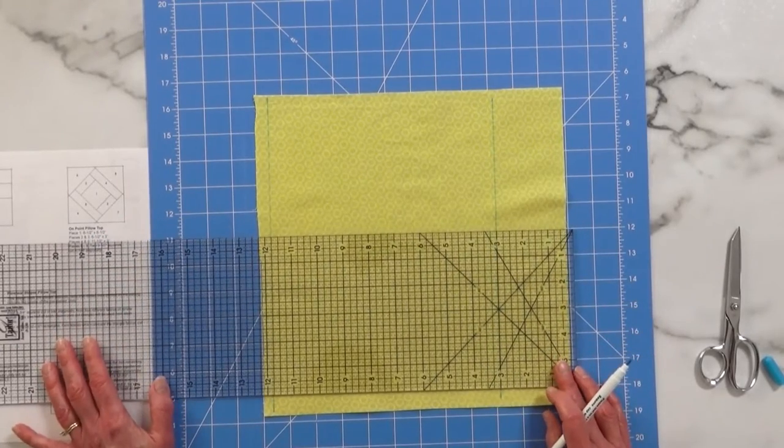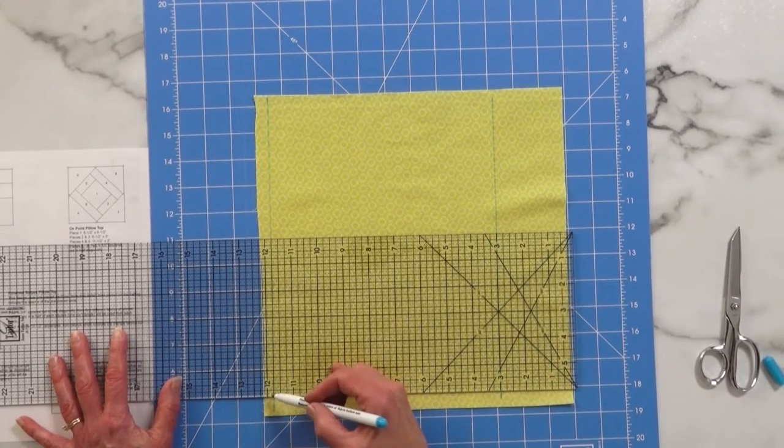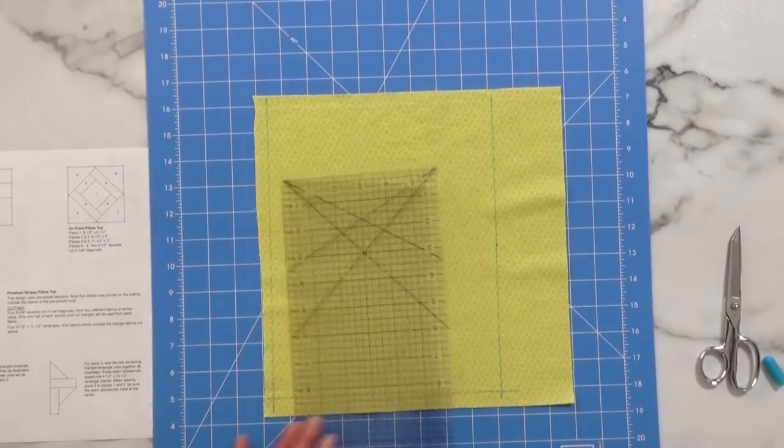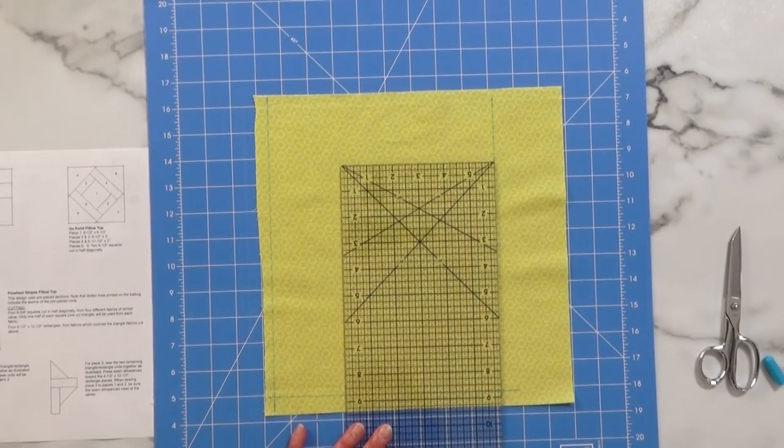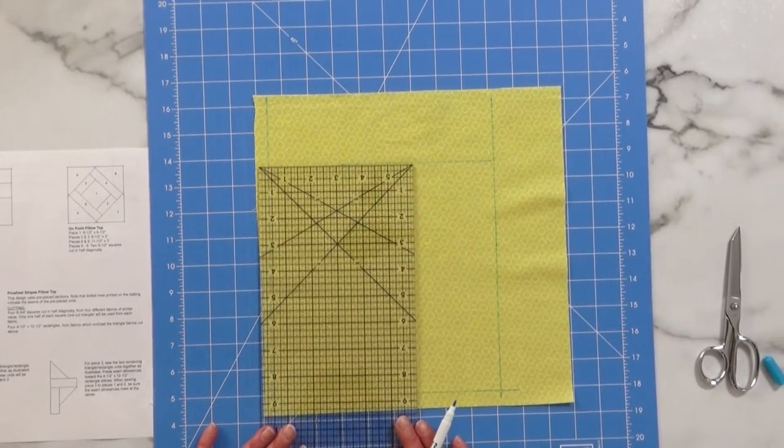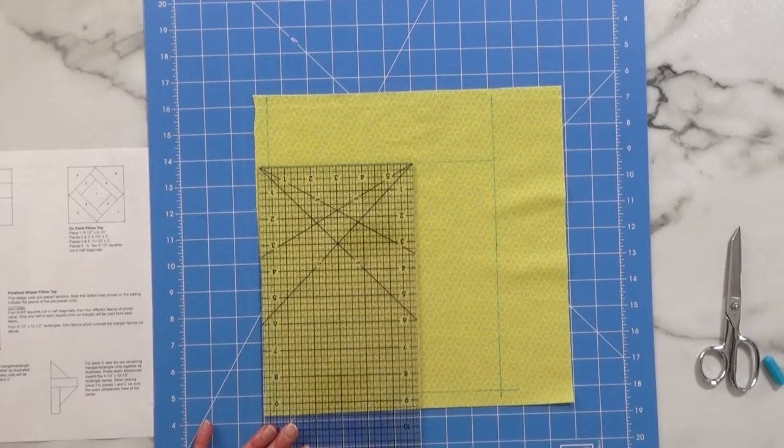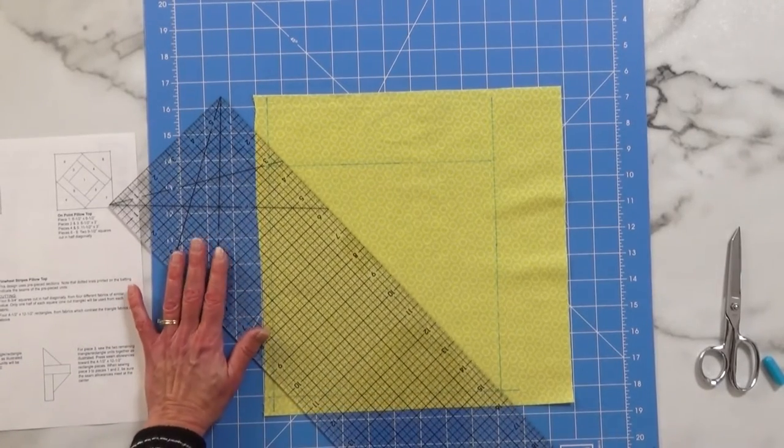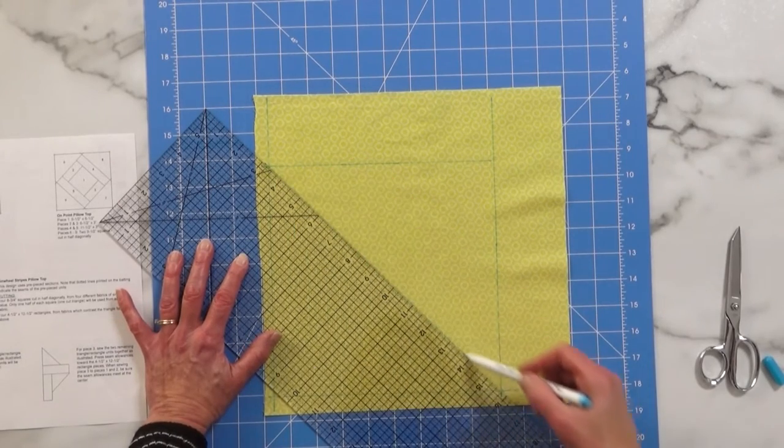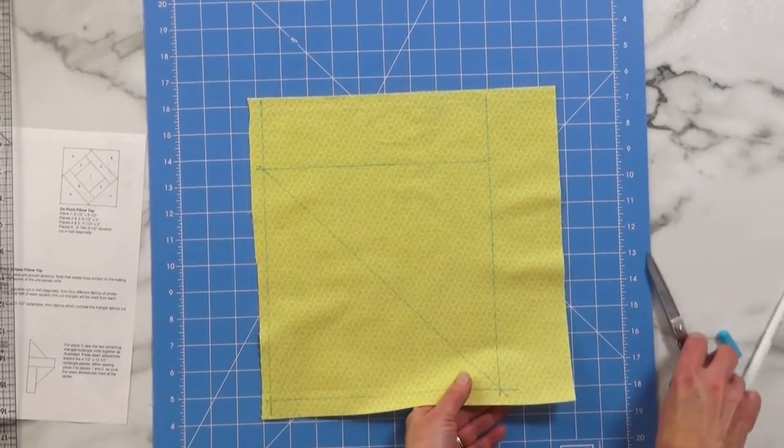Then we want to make sure we keep everything nice and square so using the lines of our ruler you can make sure that everything stays straight. And then we're going to measure eight and three quarters from the bottom, which will give us our square. Now the instructions tell us we need to cut this square in half diagonally. So once I draw this I can then mark my diagonal line through here and I'll cut four pieces just like this.